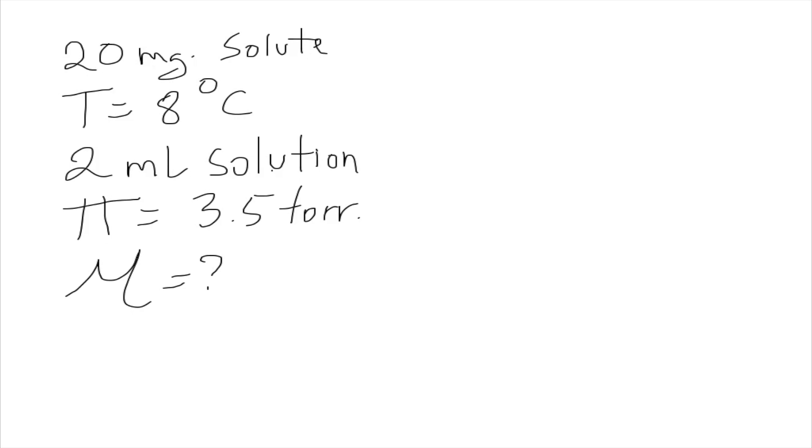First, let's identify what we have. We have the mass of the solute, the volume of the solution, the temperature, and the osmotic pressure. From the temperature and osmotic pressure, we can obtain the molarity. When we have the molarity, we can obtain the mols. And the molar mass is simply the mass over the mols.